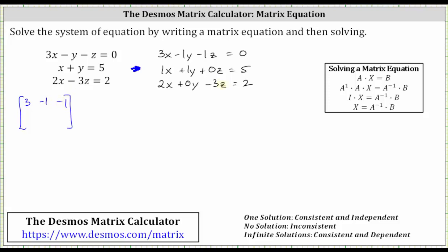From the second equation, the second row is 1, 1, 0. And the third row from the third equation is 2, 0, negative 3.